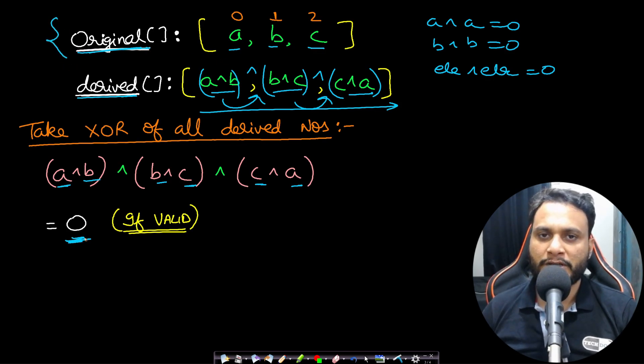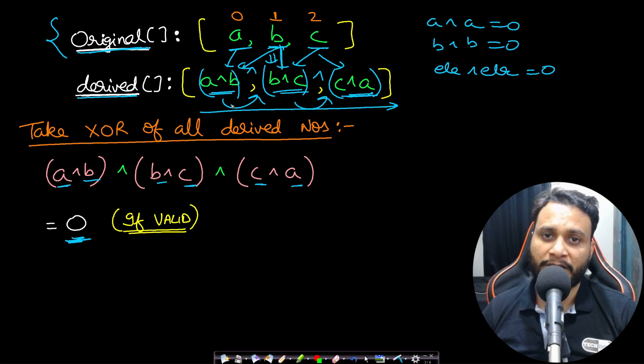If you don't get a 0 value, then it can never be valid, because the rule of the problem itself mentions that each of the elements will occur two times, right? Because if you take a, it is occurring in the first and the last element. If you take b, it is occurring in the first and the second element. c is occurring in the second and the third element, and so on.